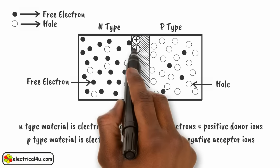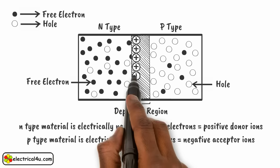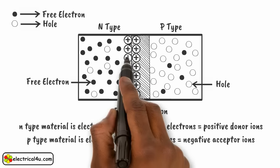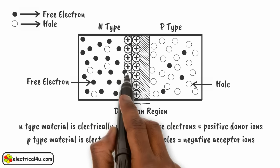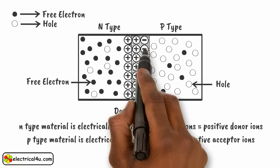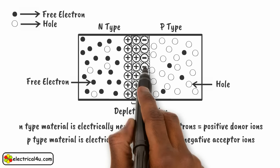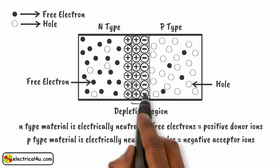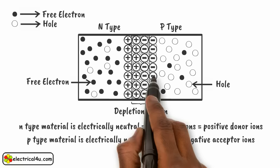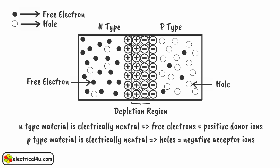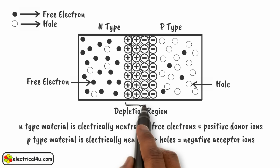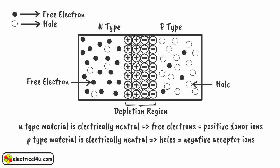After absorption of free electrons in the N-type side of the depletion region, uncovered positive donor ions will remain there. After absorption of holes in the P-type side of the depletion region, uncovered negative acceptor ions will remain there. This region of uncovered positive and negative ions is called the depletion region, due to the depletion of free carriers in the region.